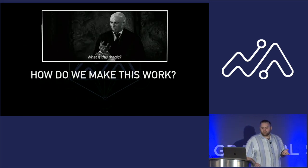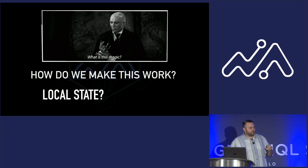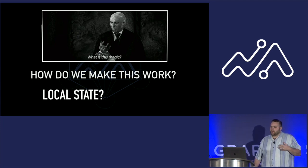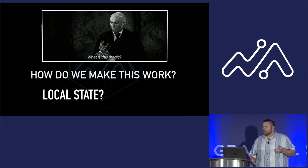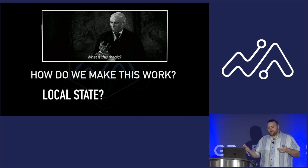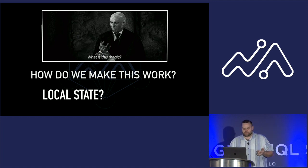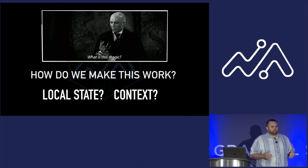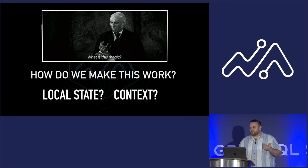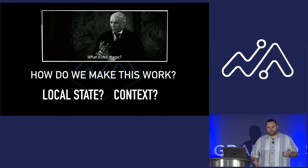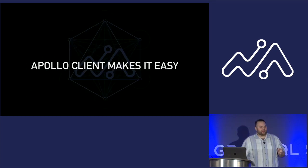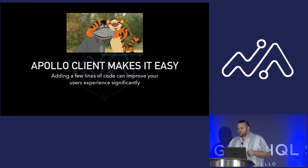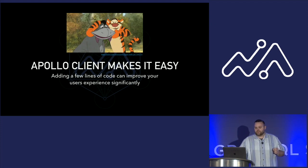How do we make this work? We have a couple of different options. We could store our object in local state and update it when our server response comes back, but that doesn't work the greatest — you'd almost have to lift it up if you wanted to use it in multiple components. You could move it into a context, which works. You could use Redux, but it adds a lot of extra code. Apollo Client makes this operation very easy. With a few lines of code, you can improve user experience significantly.